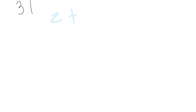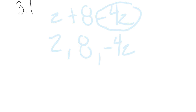So for example, if I had z plus 8 minus 4z, and I said what are my like terms? First, let's write out all our terms. We have z, we have positive 8, and we have negative 4z. Remember that negative sign is part of this term. Terms that are like have the same variable to the same power. So these guys both have a z, and that z is to the same power. So the like terms would be z and negative 4z.